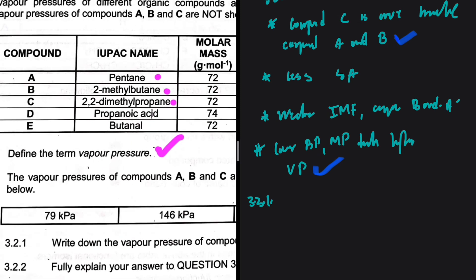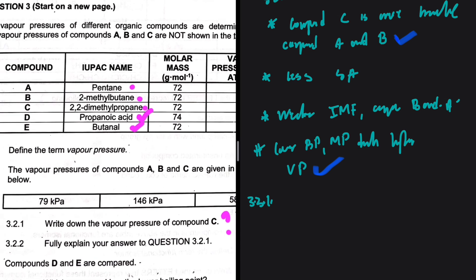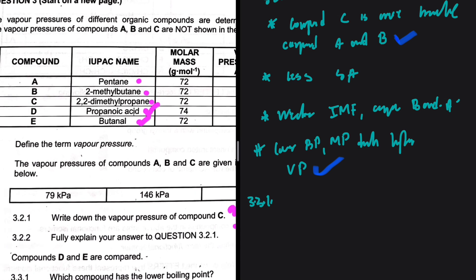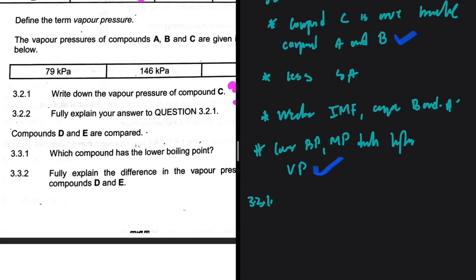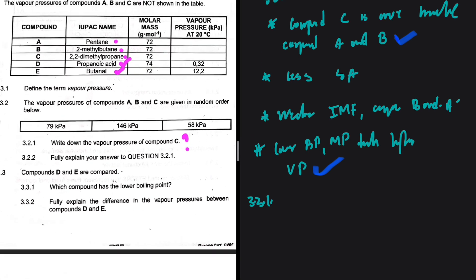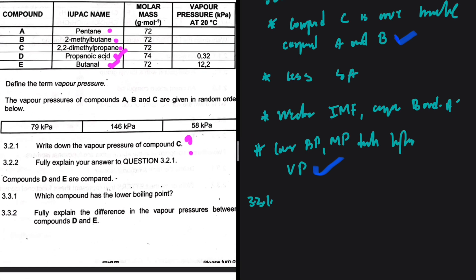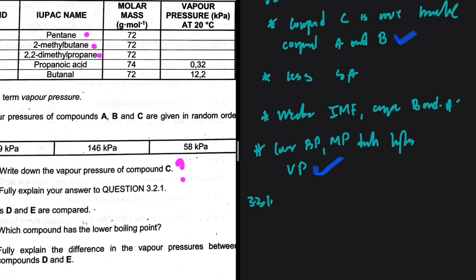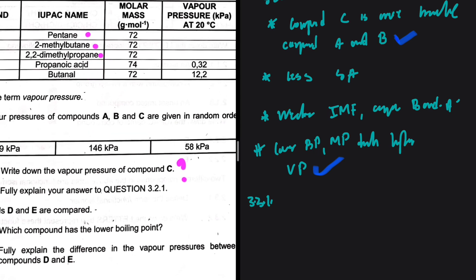For 3.3.1, compounds D and E are compared: D is propanoic acid and E is butanol. We already expect propanoic acid to have the lower vapor pressure because it has strong intermolecular forces. The vapor pressure of propanoic acid is 0.32 and that of butanol is 12.2. So which compound has the lower boiling point? Butanol. The lower the boiling point, the higher the vapor pressure — that's how it works.